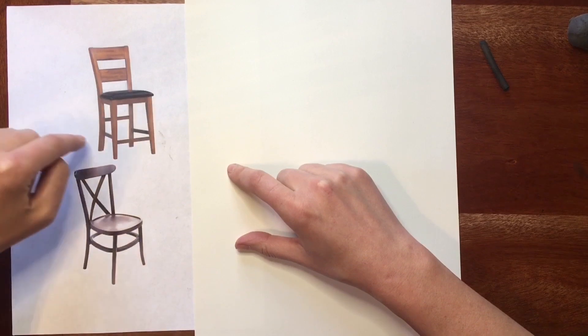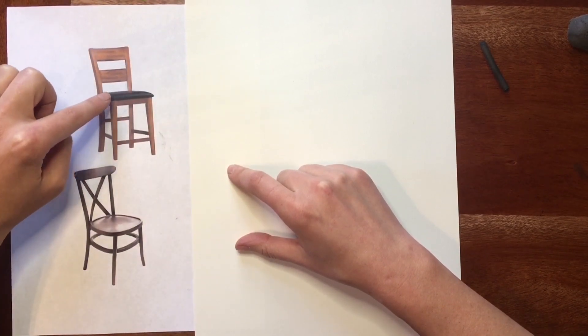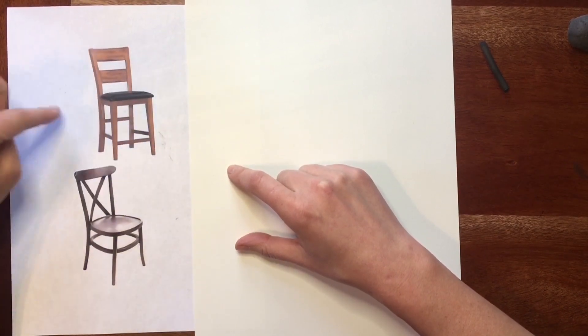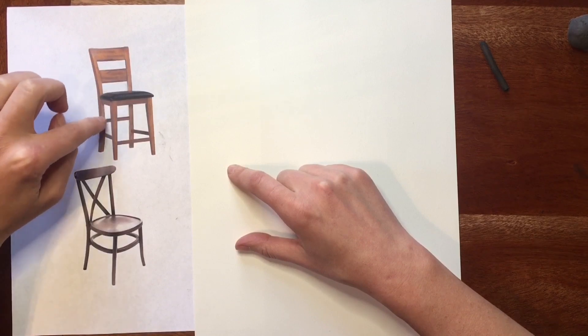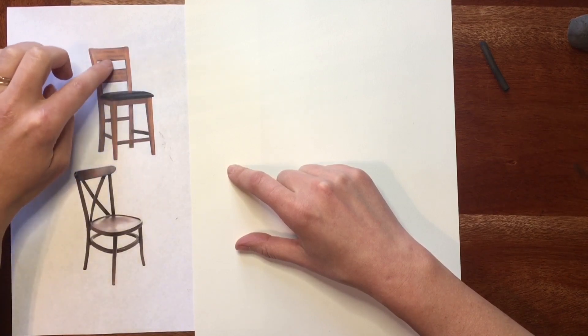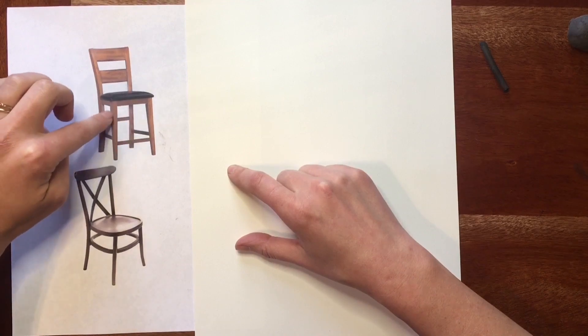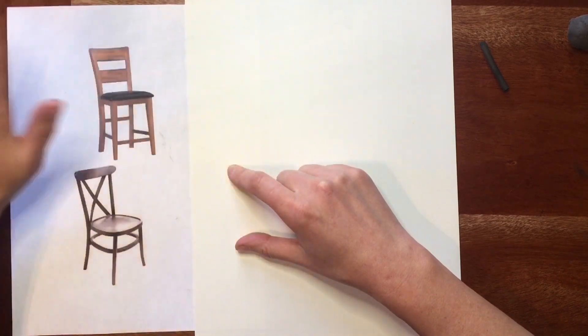This is the last time for a while we're going to be thinking about this object as a chair. We're not thinking about it as a chair anymore. It is little spaces and shapes we are only focused on. We are only concerned about the negative space. The chair needs to melt away.